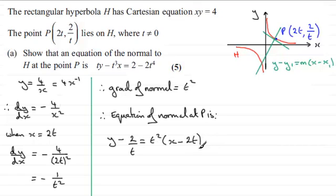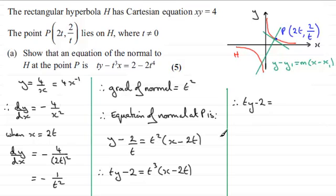So it's just a question of getting this equation to this one, and I can see that if I multiply through, first of all, by t, we have ty minus 2 equals t cubed multiplied by x minus 2t. And then if we expand the bracket and rearrange this, we'll get the answer. So we've got ty minus 2 equals, expanding the bracket gives us t cubed x minus 2t to the power 4.